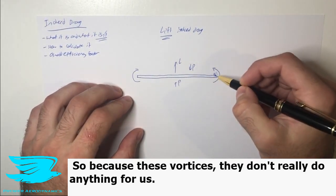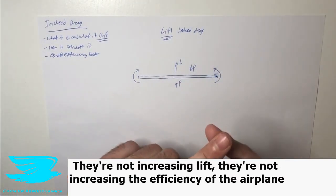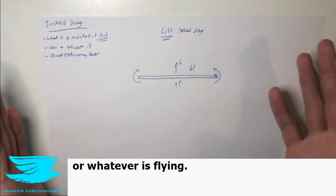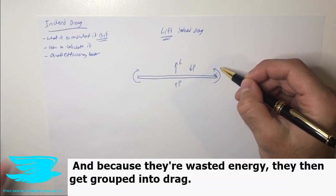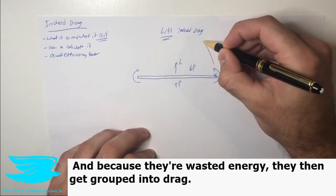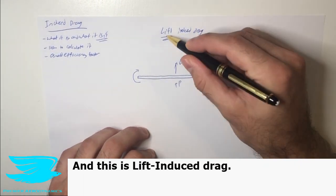So because of these vortices, they don't really do anything for us. They're not increasing lift, they're not increasing the efficiency of the airplane or whatever it's flying. So they are just wasted energy. And because they're wasted energy, they are then grouped into drag. And this is lift induced drag.